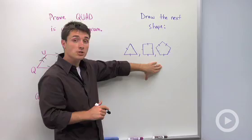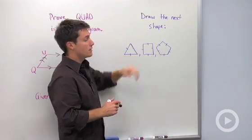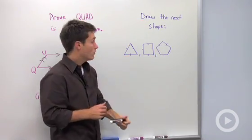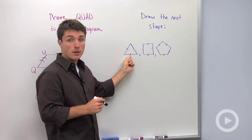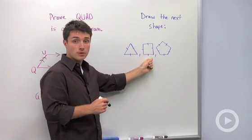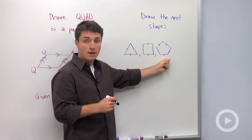let's say I gave you these three shapes and said draw the next shape in this sequence. You would see that we have an equilateral triangle, an equilateral quadrilateral, and an equilateral pentagon.